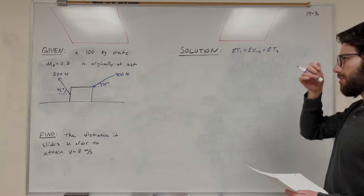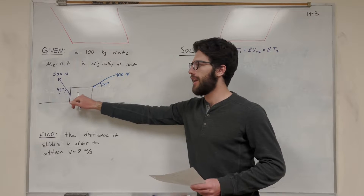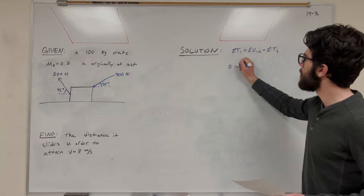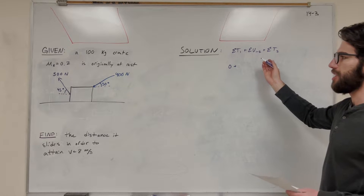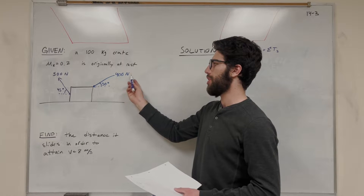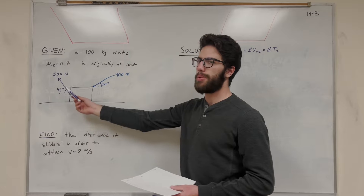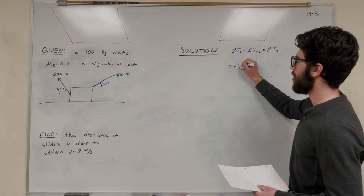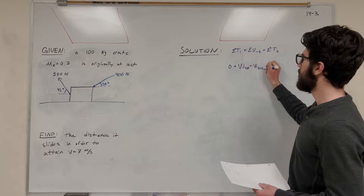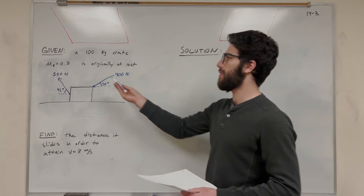Pretty simple to understand. Our initial energies — we're starting at rest, so there's no kinetic energy, no gravitational energy, so we're going to have that equal to zero. What energy are we inputting? Well, there's going to be the work from the 400 newton force because we're pushing it in. Then this 500 newton tension force is also applying work to this box — work of the 400 plus work of the 500. Those are putting in energy.